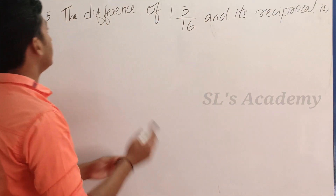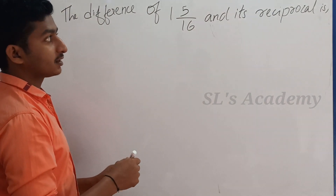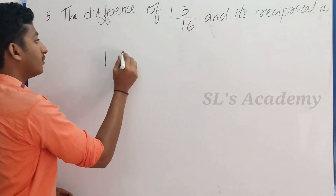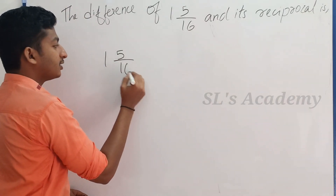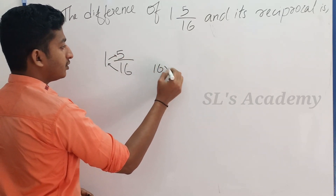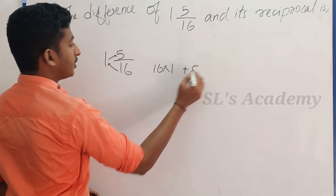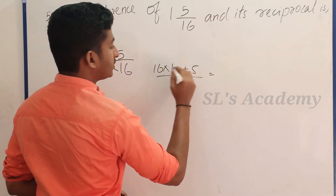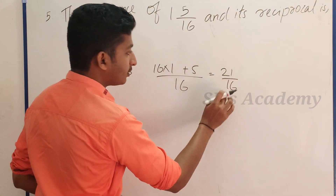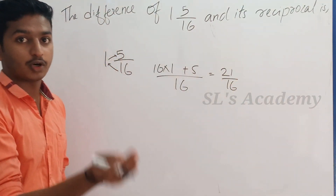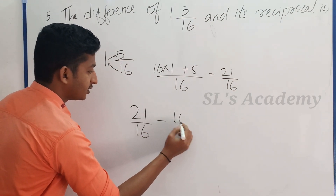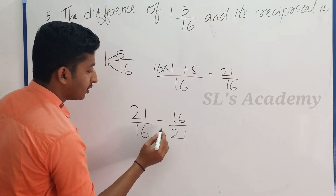The difference of 1 and 5 by 16 and its reciprocal. What is the mixed fraction? 1 and 5/16. Converting: 16 into 1 plus 5 by 16 equals 21/16. The difference is 21/16 minus 16/21.